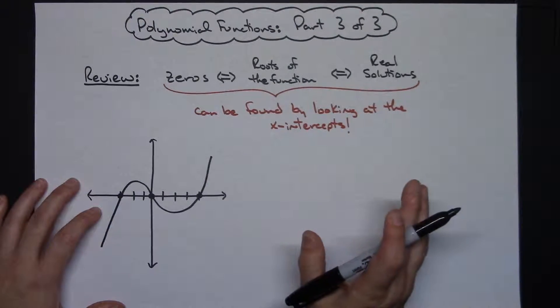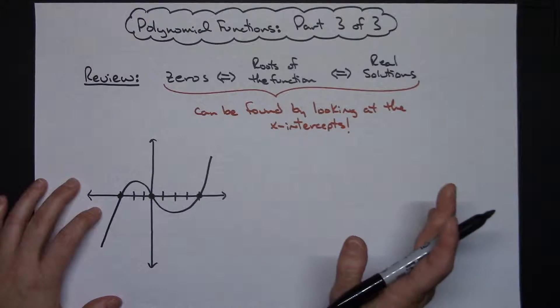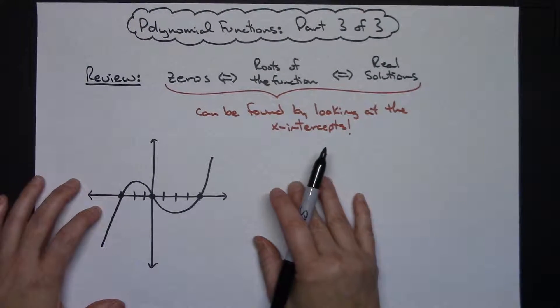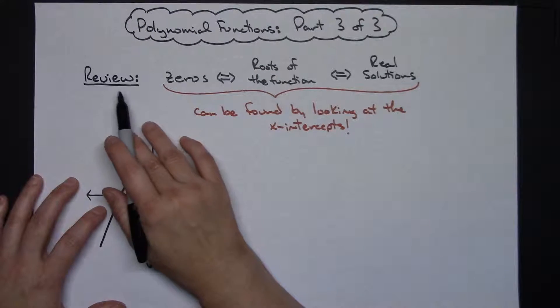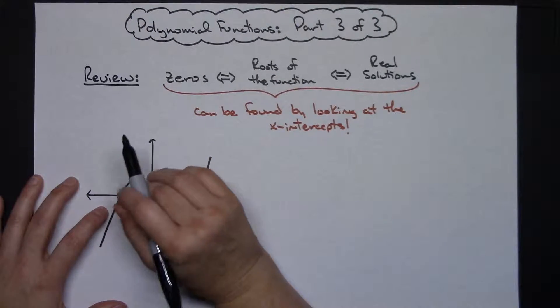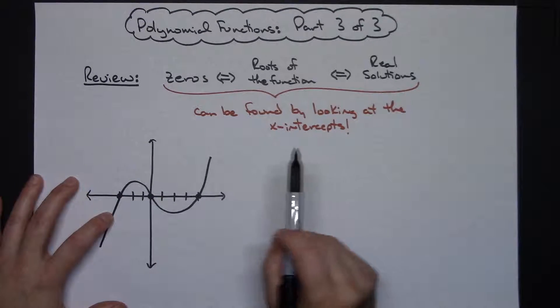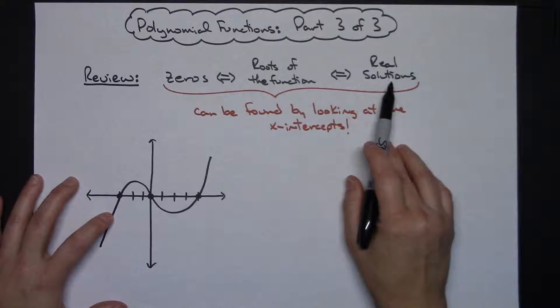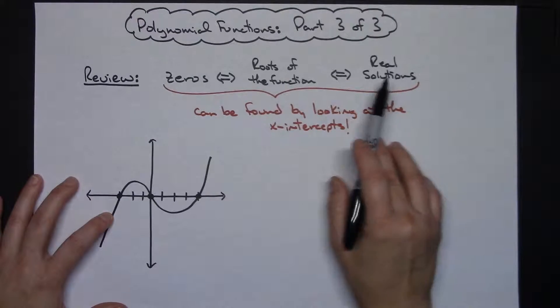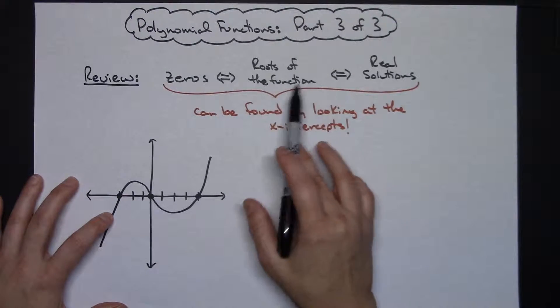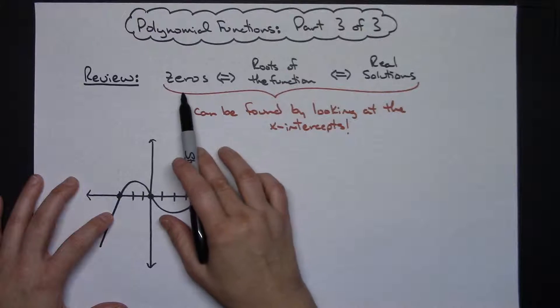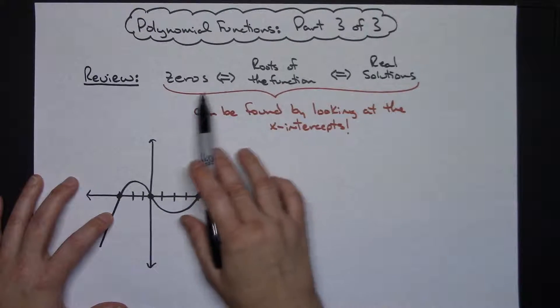On this one we want to focus on being able to find the roots of our polynomial function. Hopefully this is review for you. In algebra 1 and algebra 2 class, hopefully you made the connection between the real solutions to your polynomial curve and the roots of the function when it's written in function notation, the zeros of the function.